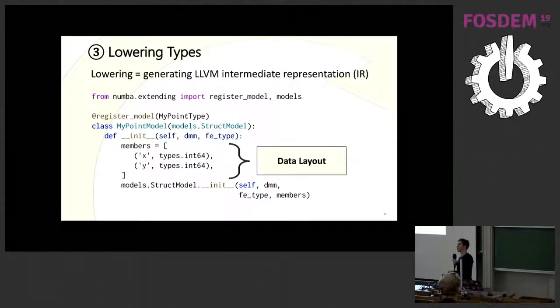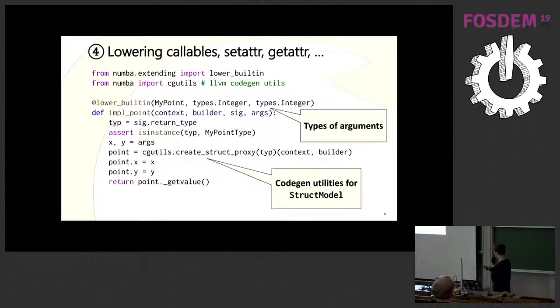Next, when that is finished, you have a rewrite phase where you are able to reuse the types. And when all that is finished, you can start with actually lowering. That means generating LLVM intermediate representation. Again, decorator, same principle. We have a MyPoint type. We're going to register a model to a certain type. In this case, for our point, we want to use a struct-like, a C struct-like model with an x and y attribute, of which we here assume that it's an integer. That's basically the data layout of your point. This is telling Numba, I have here a data structure with this data layout. As you also see, this is a list because the order is important.